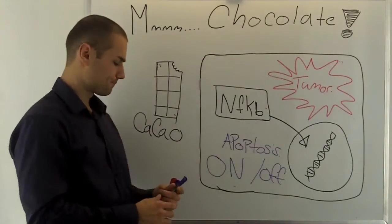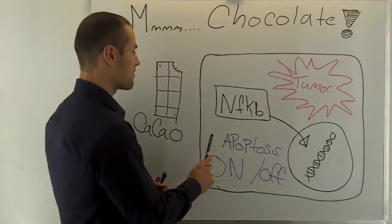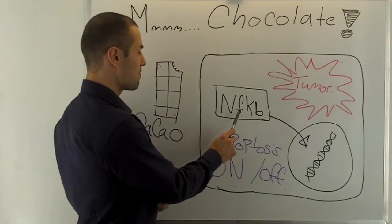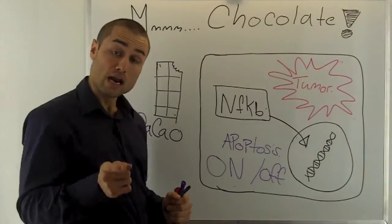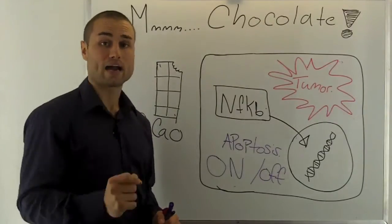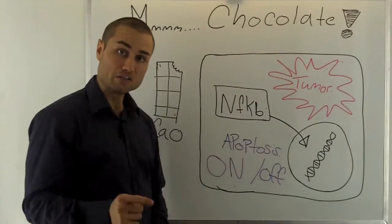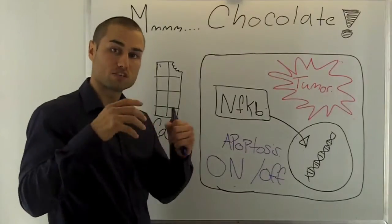Let's start slowly though. First we have a thing called nuclear factor kappa beta. Now this is good within your body but it's not good when it's over activated. Remember there must be balance within our cells.